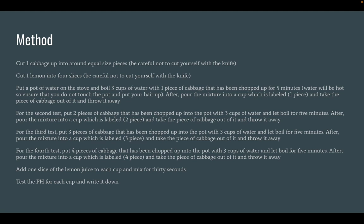After, pour the mixture into a cup labeled '1 piece.' If any pieces of cabbage get into the cup, take them out and throw them away. For the second test, put 2 pieces of cabbage in, cut to equal size as your first test, and pour into the cup labeled '2 pieces.' Repeat this for the third test with 3 pieces and the fourth test with 4 pieces. Then add 1 slice of lemon juice — which should be 1/16th of a cup — to every cup of mixture and mix for 30 seconds. Then test the pH for each cup and write it down.